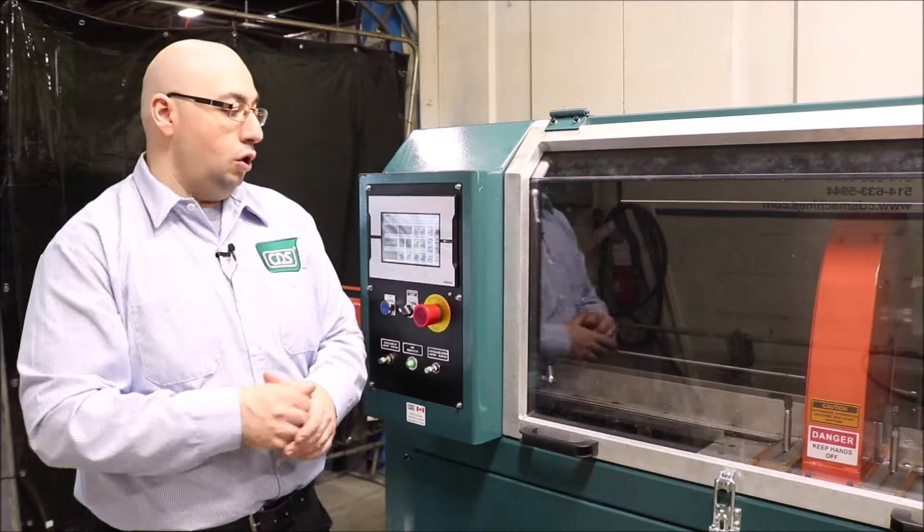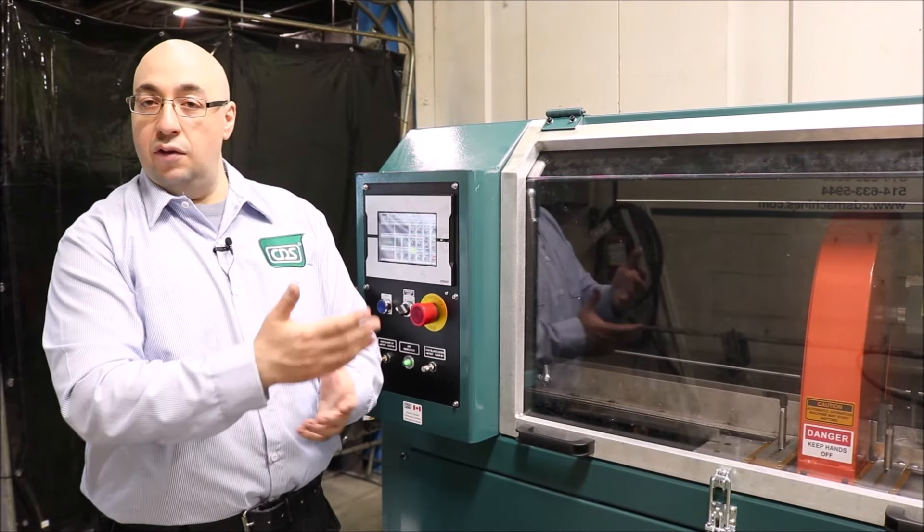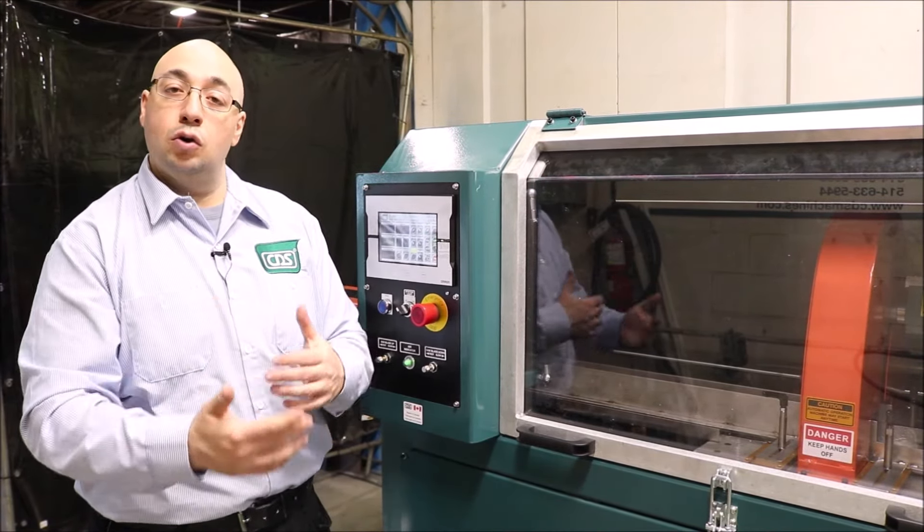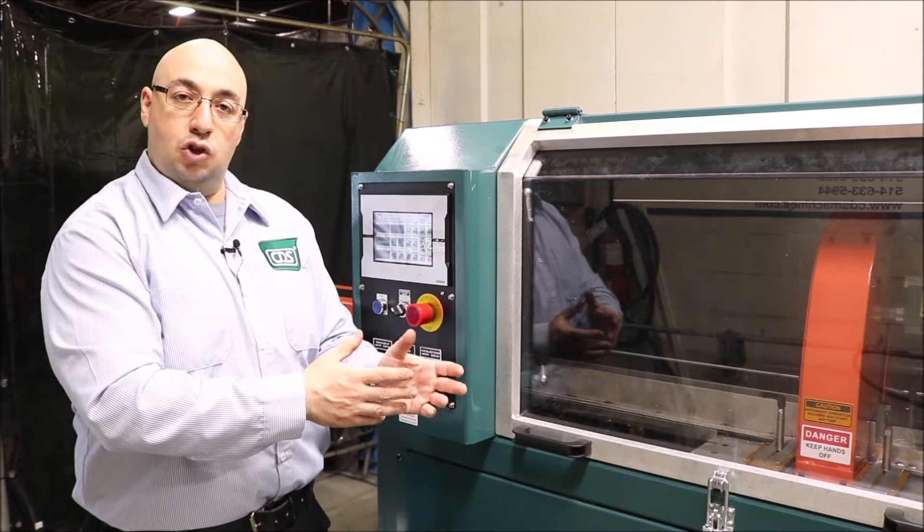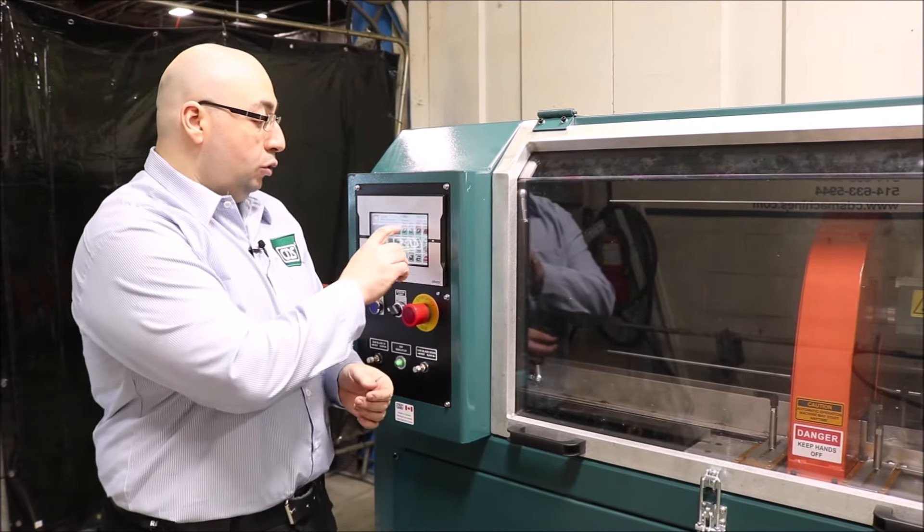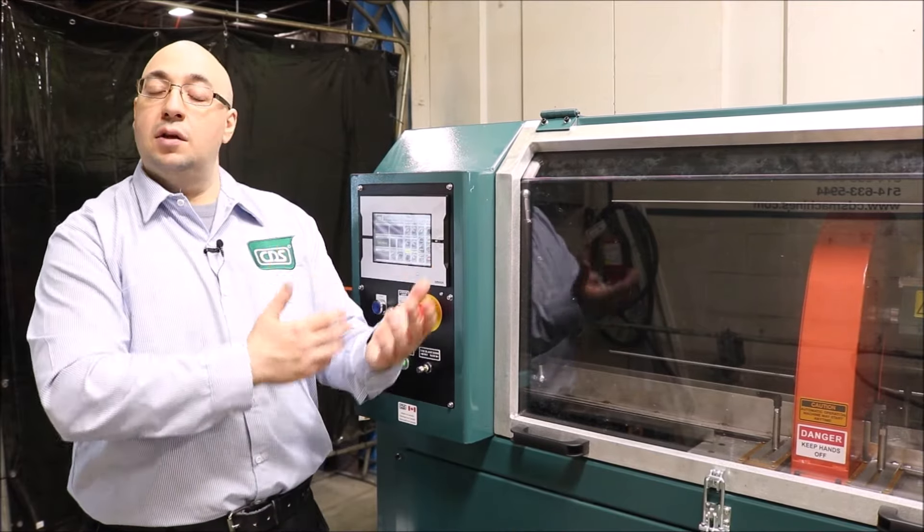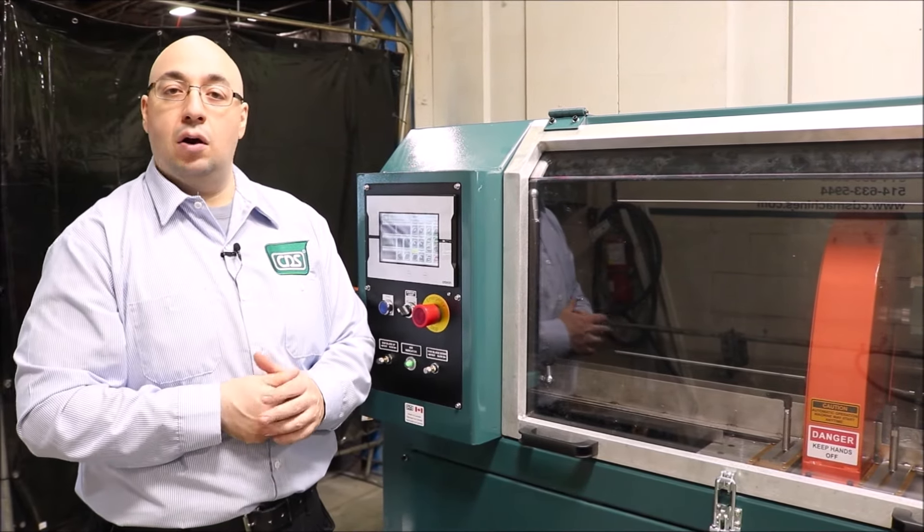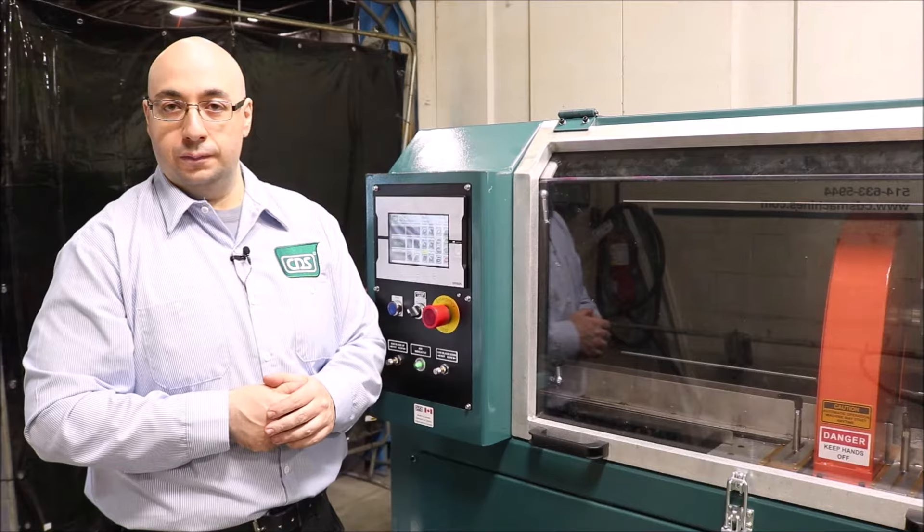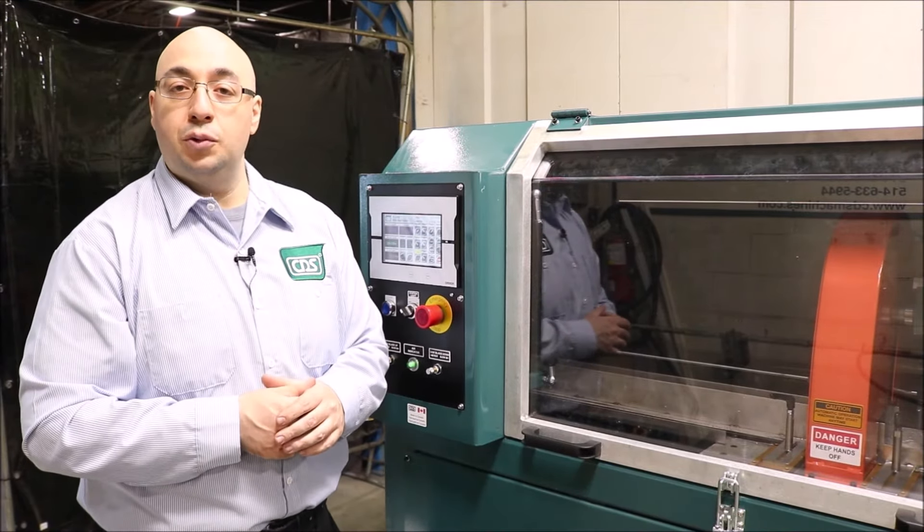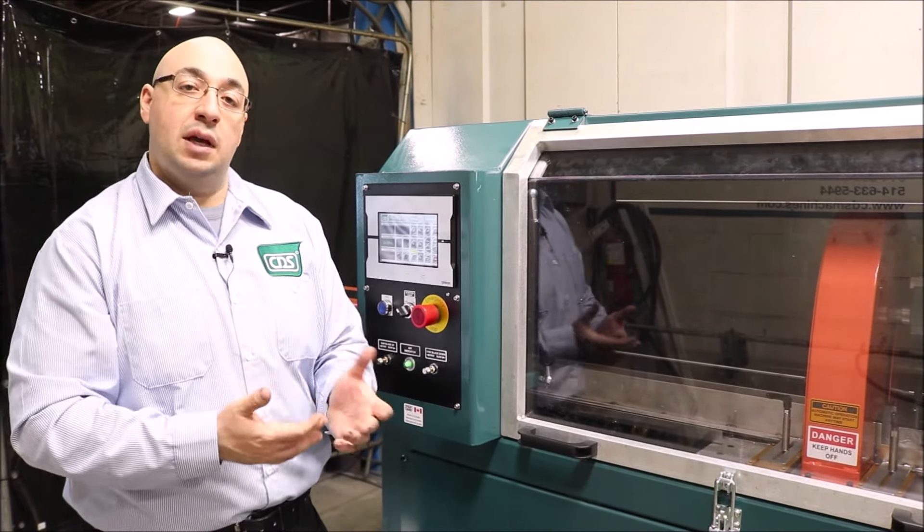To power down your machine, we will press the stop button if your machine is doing a cycle or in automatic mode. Once the machine stops, we will be able to hit system off. Then we can go in the back of the machine and power down with the main disconnect switch. You can use your tag out and lock out procedure if you desire to do any maintenance on the machine.